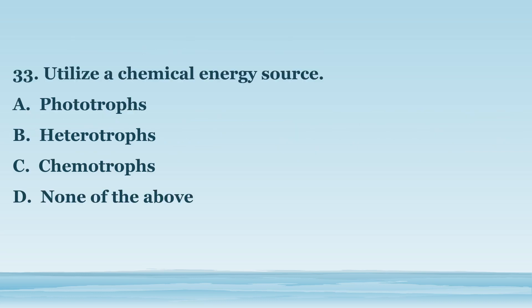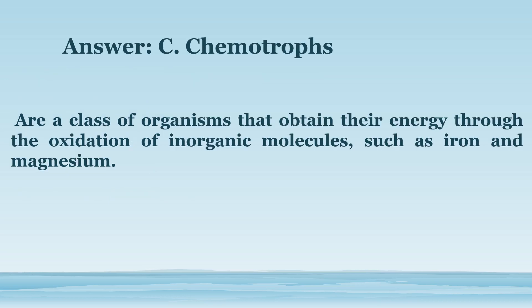Number 33. Utilize a chemical energy source. A. Phototrophs. B. Heterotrophs. C. Chemotrophs. D. None of the above. The answer is letter C. Chemotrophs. Are a class of organisms that obtain their energy through the oxidation of inorganic molecules, such as iron and magnesium.